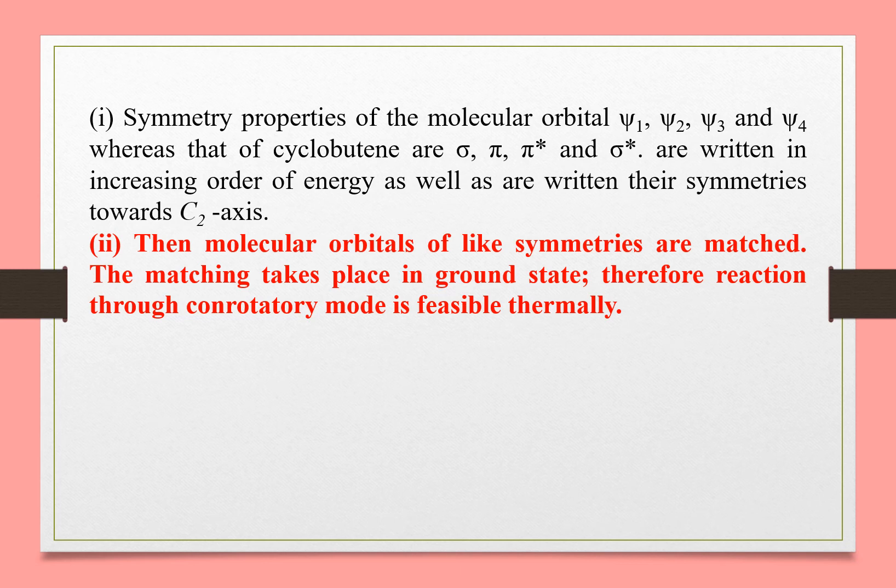The conclusion is that the symmetry properties of the molecular orbitals Psi1, Psi2, Psi3, Psi4 of butadiene and sigma, pi, pi*, sigma* of cyclobutene are written in increasing order of energy along with their symmetries towards the C2 axis. Molecular orbitals of like symmetry are then matched. The matching takes place in the ground state for the lower orbitals, but the final matching is in the excited state.